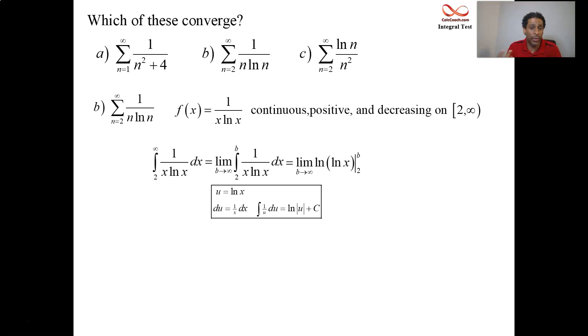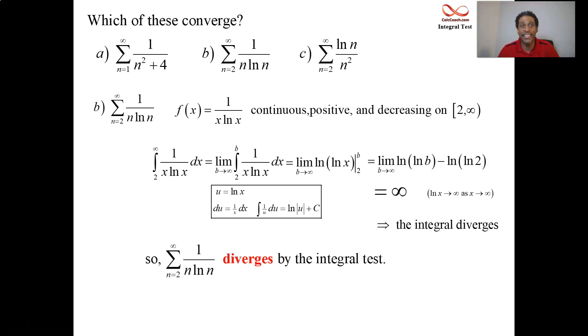So we put a b in and we put a 2 in. But what happens is b goes to infinity. The natural log of an infinitely large number is infinitely large, and then there's another natural log on top of that. This integral is infinite. ln x goes to infinity as x goes to infinity. This integral diverges. And according to the integral test, whatever this integral does, the series follows up and does exactly the same thing. 1 over n ln n also diverges.